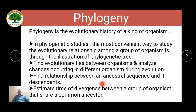It also estimates the time of divergence between groups of organisms that share a common ancestor. For example, if two particular organisms are alike, their ancestor must be the same and must have diversified few or many years ago.